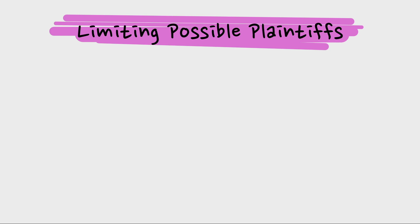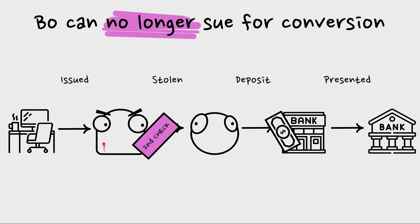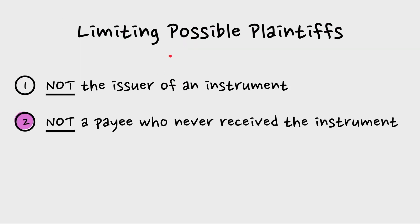Article 3 also limits possible plaintiffs in conversion. If you think about these, they make sense: the issuer of the instrument cannot sue for conversion — it's not stolen from them, they're issuing it, and they have other avenues of recovery. Similarly, if the check is being issued to the payee and they never receive it, that person cannot sue for conversion either. These parties are considered to have more direct rights — the payee has a right back against the issuer under the underlying obligation.